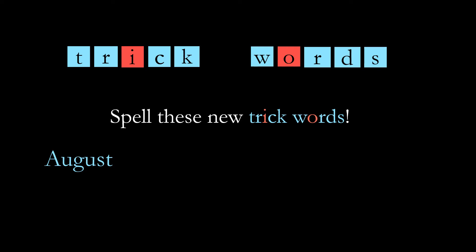The next one is daughters. My neighbors have four daughters. Let's take a look at it. There's that S at the end that sounds like a Z, remember that? And the last one is laughing. Everyone was laughing when I told that joke. And let's take a look at that.